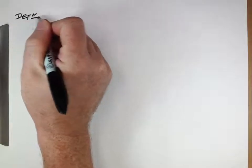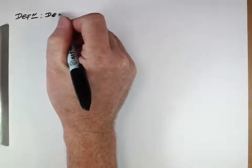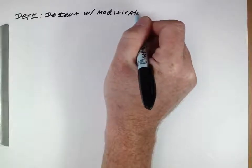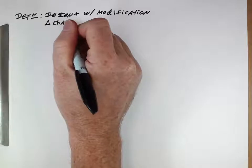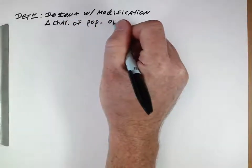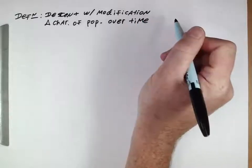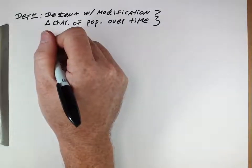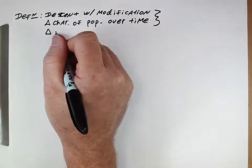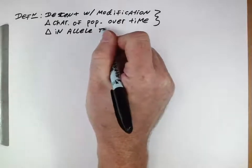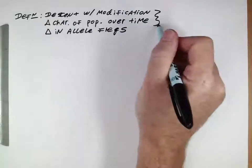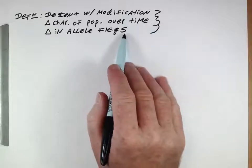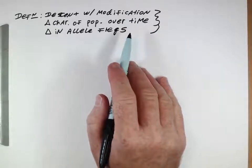Earlier in the course, or if we read the book, we had 'descent with modification' as one of our definitions, or 'change in the characteristics of a population over time.' These definitions are listed in the appendix or the appropriate parts of the book. A third definition — the one you may have gotten in Bio 211 — is 'the change in allele frequencies in a population over time.' All three definitions are used; the third is the more modern one since the modern synthesis.